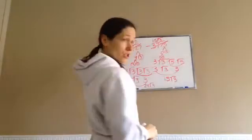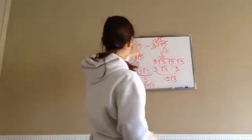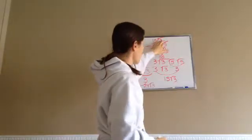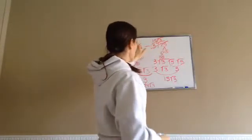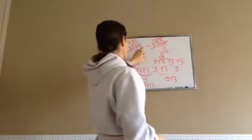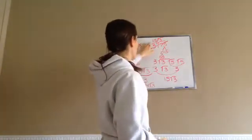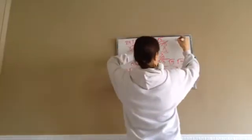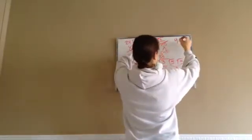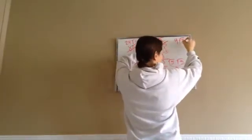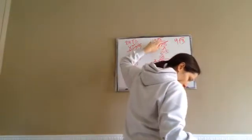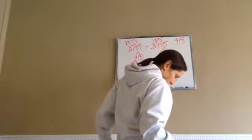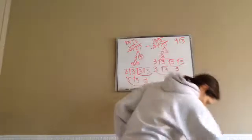Now this is our new problem: 24 square root of 3 minus 15 square root of 3. Both of them are square root of 3, so we can just subtract 24 minus 15, which would give us 9. And then square root of 3 is our final portion of that.